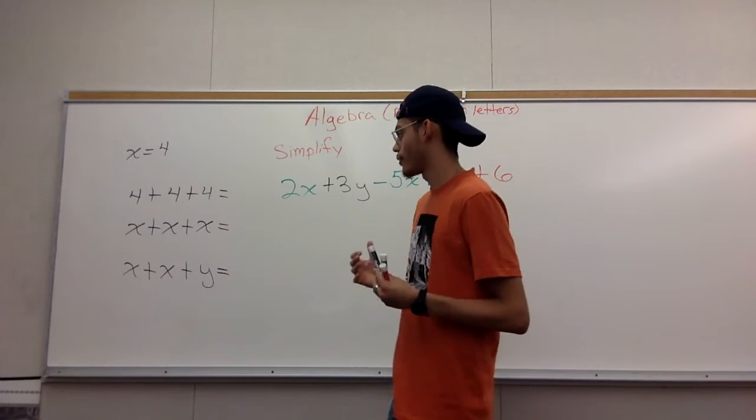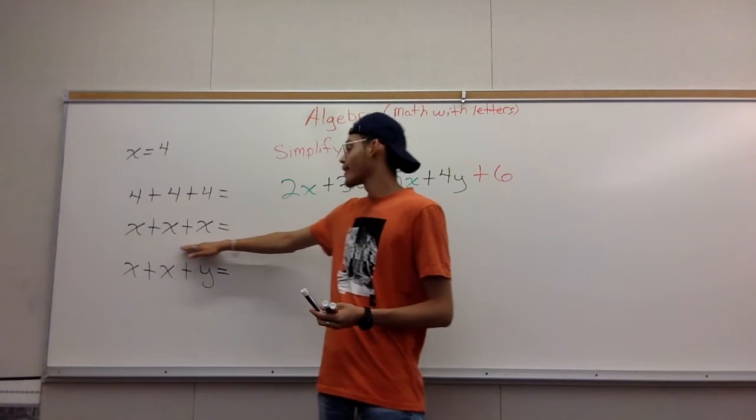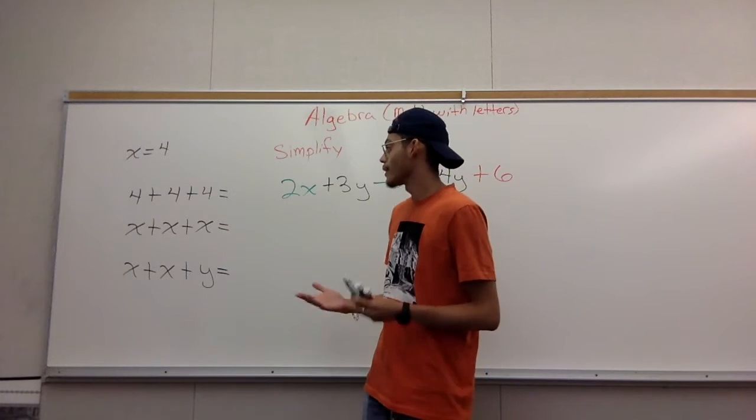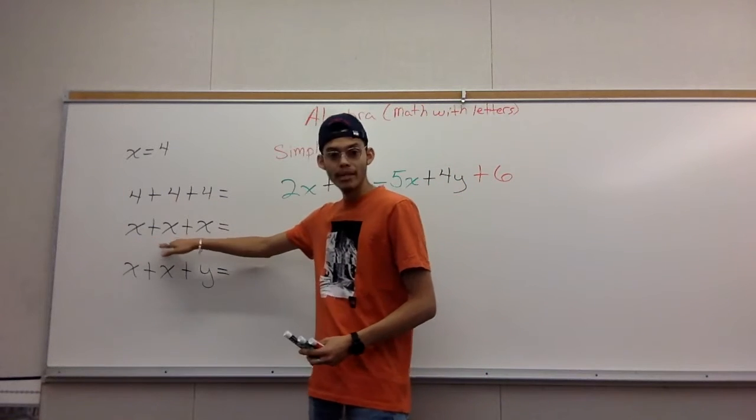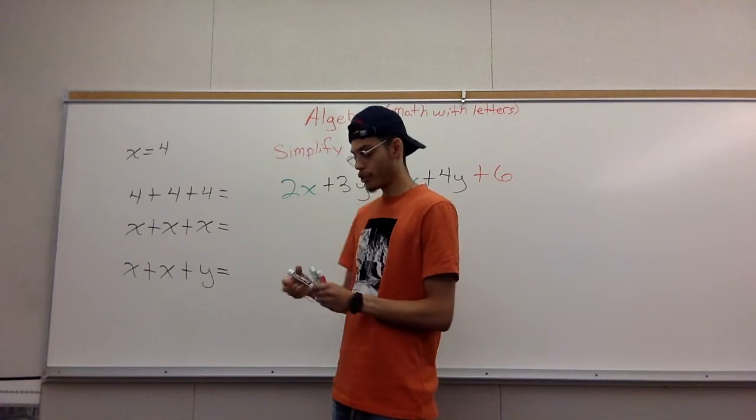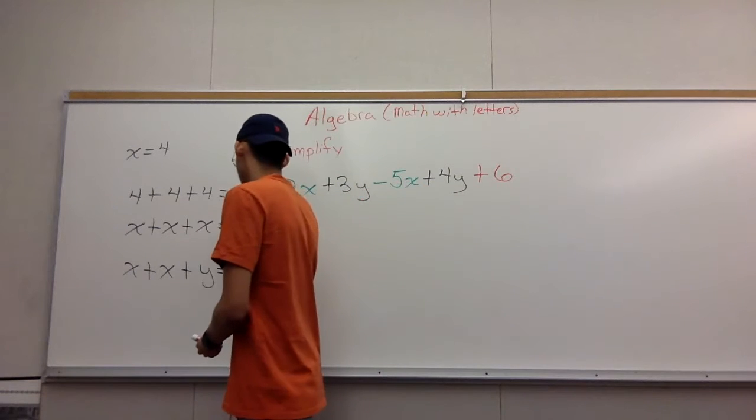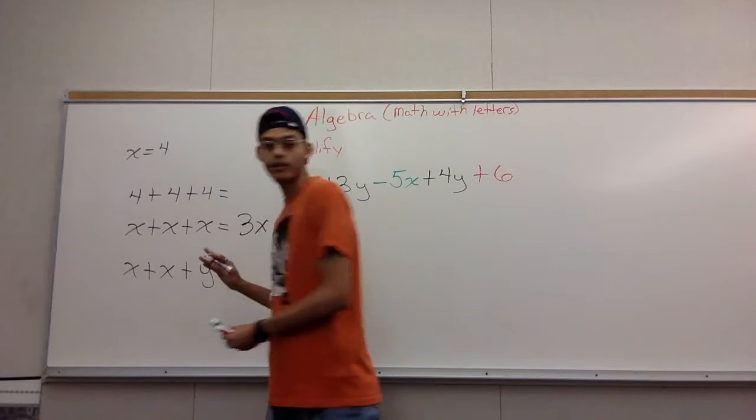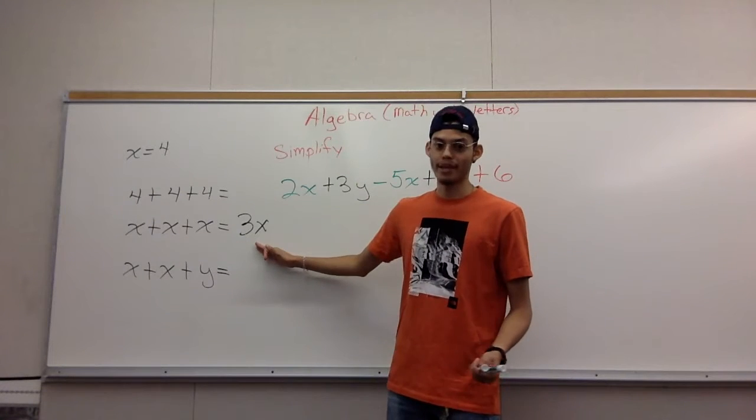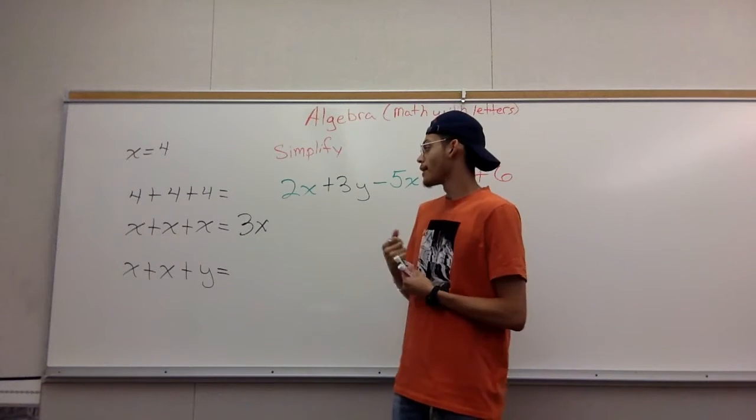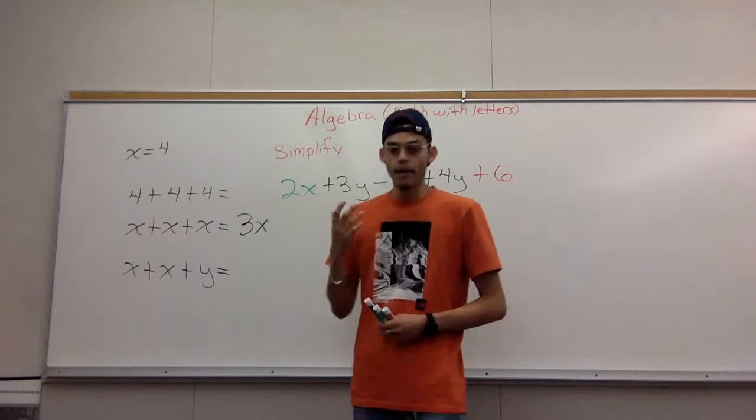To break it all down, you're going to be combining letters. That's basically what's going to be happening. If you have x plus x plus x, you're going to have 3x. You see three x's, you're going to write 3x. That's basically how it is.